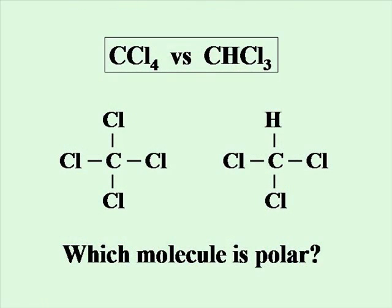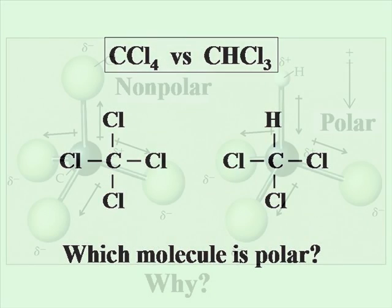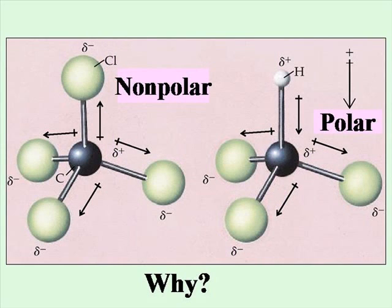Which of these molecules is polar? Which would have an uneven distribution of electrons around the central carbon? Can you see why the molecule with the small hydrogen would be polar, while the one with all chlorines is non-polar?